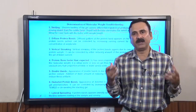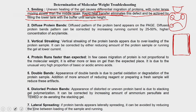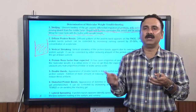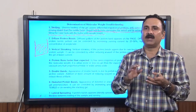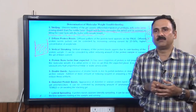To correct smiley bands, maintain cooling in the system by filling the buffer tank slightly more so the buffer maintains uniform heat and keeps the plates cool. You can also recycle or exchange the buffer, or place ice bags around the apparatus if the gel is heating excessively. The second issue is diffuse protein bands, which can be corrected by increasing the running current by 25 to 50 percent or using a higher acrylamide concentration.